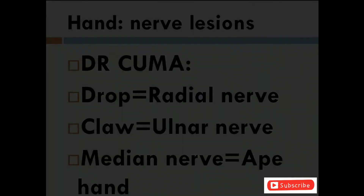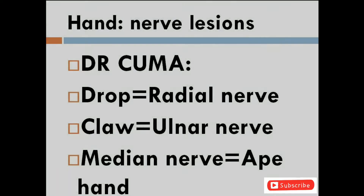Hey guys, these are the lesions of the nerves. Dr. Kuma is the mnemonic: D-E-R-C-U-M-A. D for drop, radial nerve.